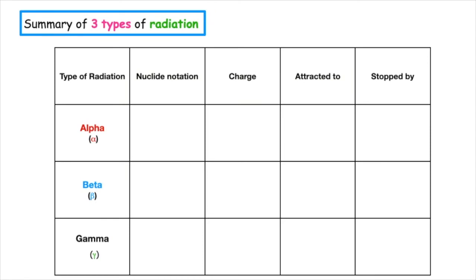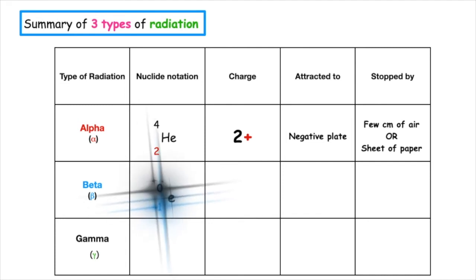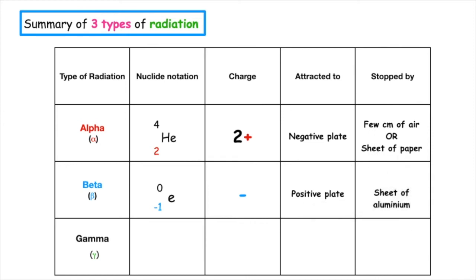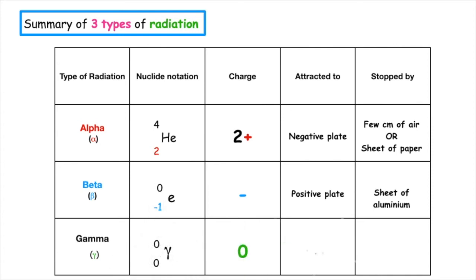To summarise: an alpha particle is made up of a helium nucleus with nuclide notation He-4,2. It has a charge of 2 positive, is attracted to the negative plate, and can be stopped by a few centimetres of air or a sheet of paper. A beta particle is a high-energy electron with a charge of minus 1. It is attracted to the positive plate and can be stopped by a sheet of aluminium. Gamma is the third type of radiation — it has no mass and no charge, is not attracted to any plate, and can be stopped by lead or concrete.